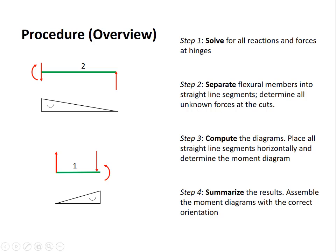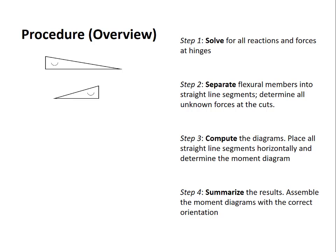Lastly we need to summarize the results. We have a bunch of different moment diagrams for different members. We now need to reassemble them with the correct orientation. So if we start with the two moment diagrams that we just calculated, look at a sketch of the structure, place the moment diagrams in their correct location. So this has been an overview of the procedure.